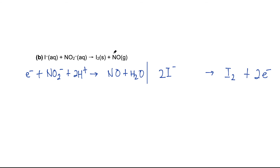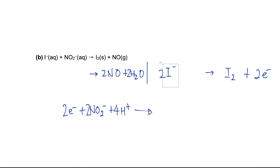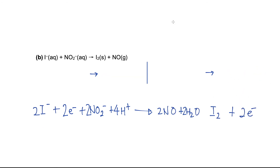We then multiply so that the number of electrons are the same: 2, 2, 4, 2, 2. Then we combine the equations — whatever is on the left goes on the left, whatever is on the right goes on the right. The electrons are the same on both sides so we cancel them. Let's rewrite the equation neatly. That's it for the acidic medium examples.